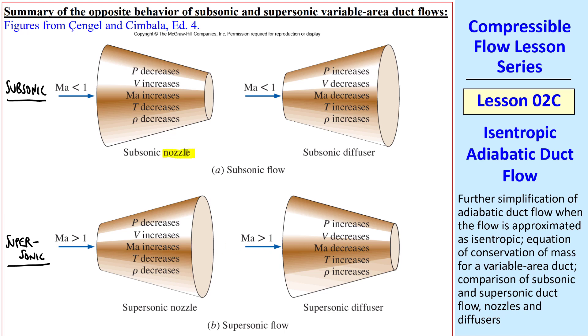A subsonic nozzle is one that increases the flow speed. V increases as area decreases. When the duct is diverging, we call that a diffuser. V decreases. Notice that pressure decreases as V increases, and vice versa.